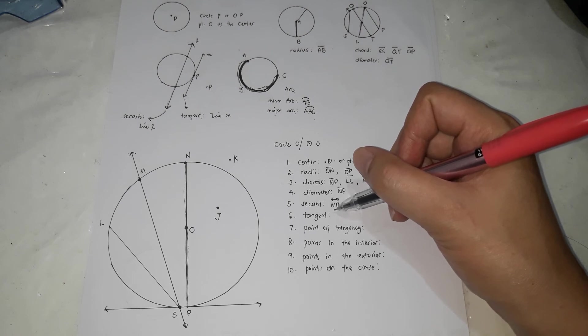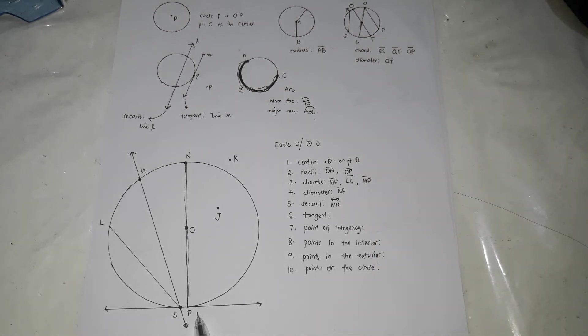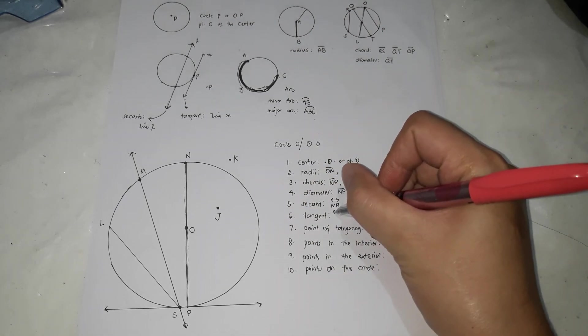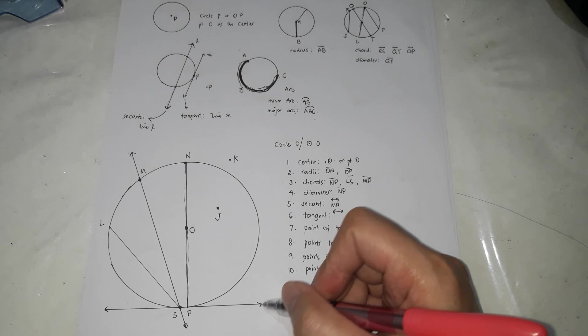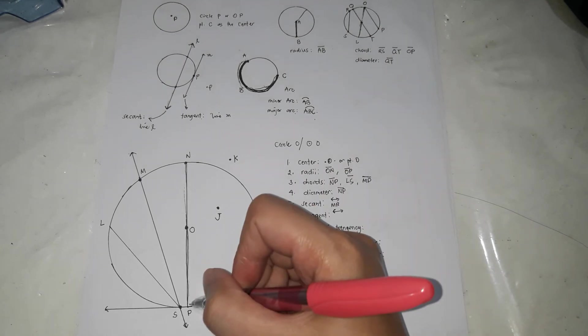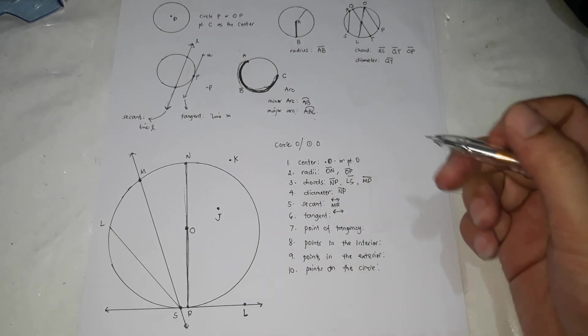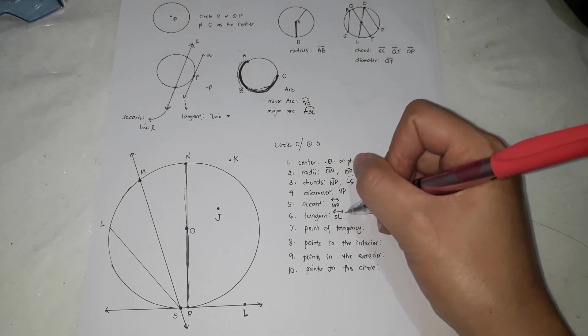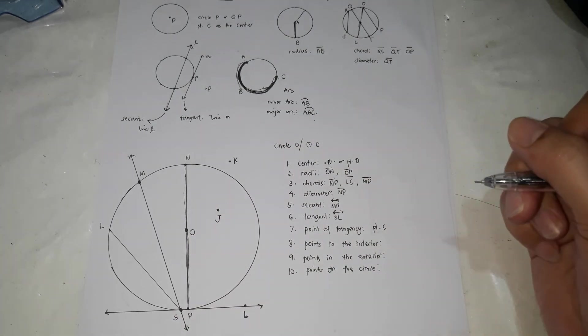Tangent. Tangent is - it passes through one point on the circle, it intersects the circle at exactly one point. And it is this one. So we're going to use two points on the line to name it. So it's S. This P is not on the line, but it looks like it is. So we'll add one letter. It's lacking one letter. That's LS or SL. Line SL or LS. The point of tangency is point S. Where it touches the circle is point S.